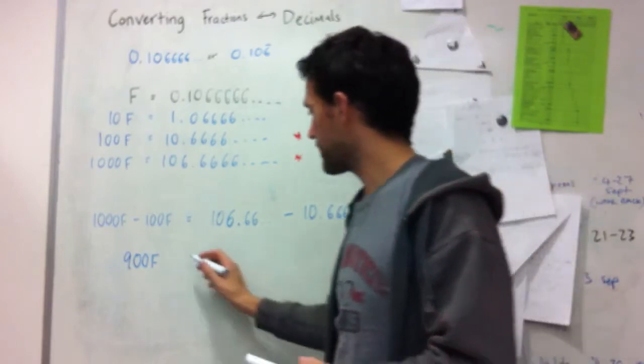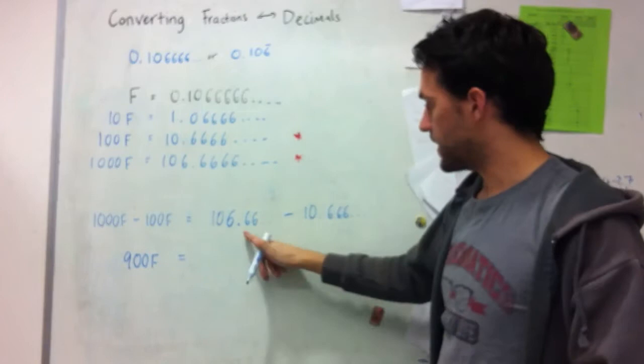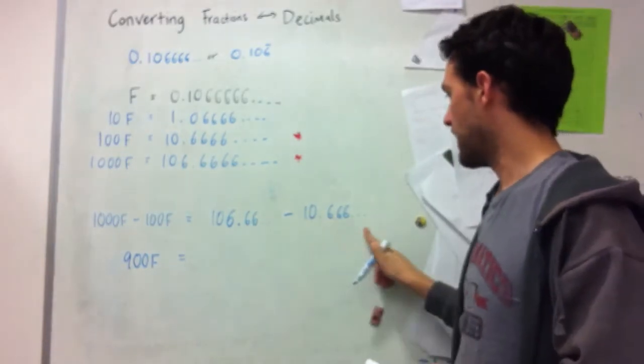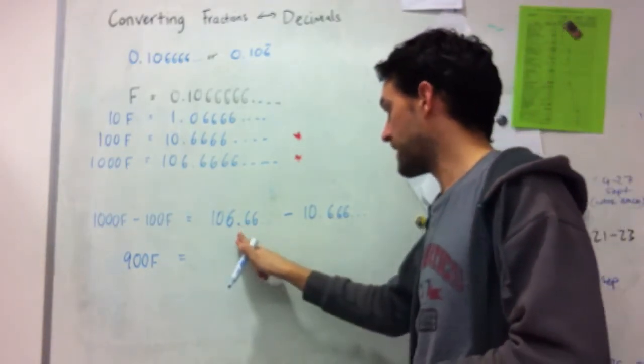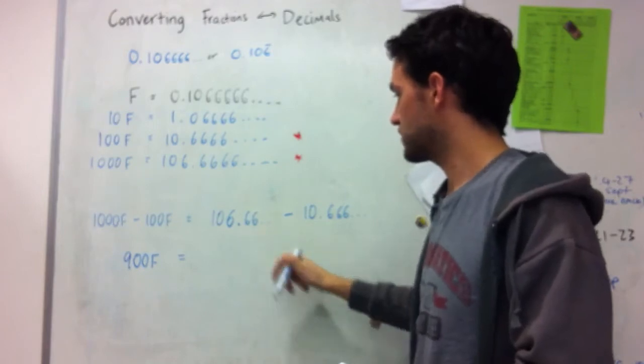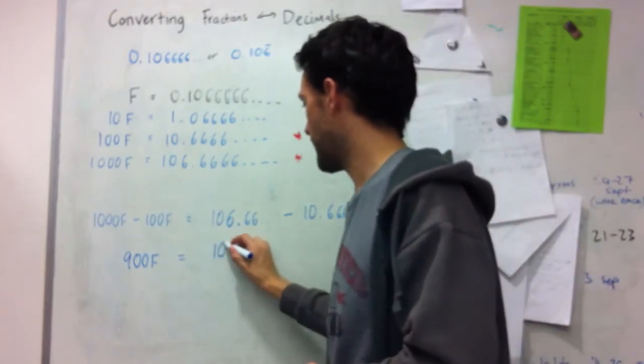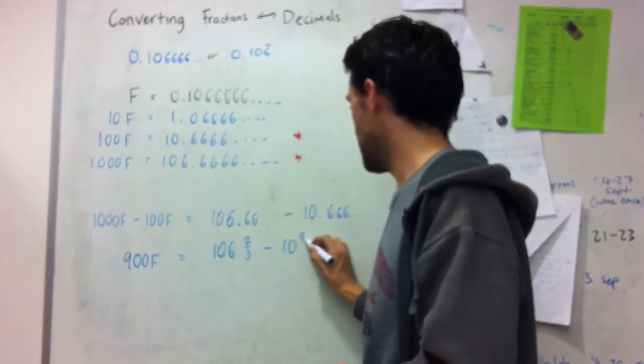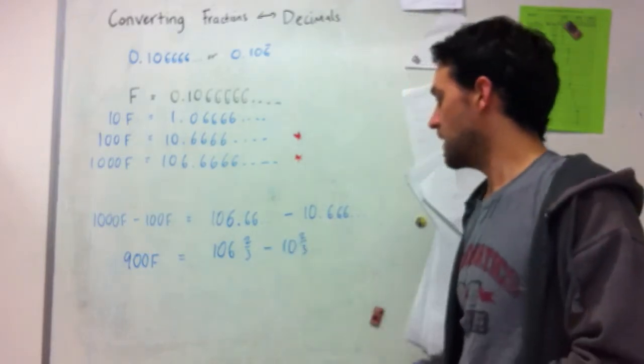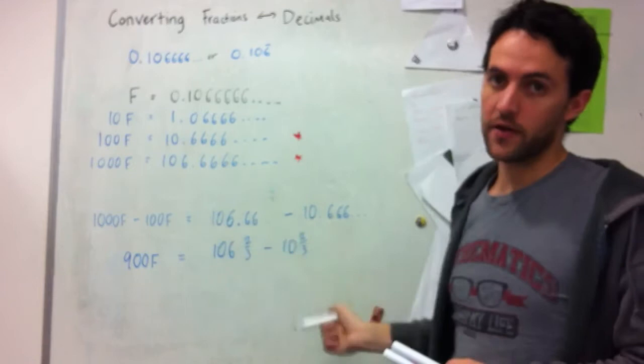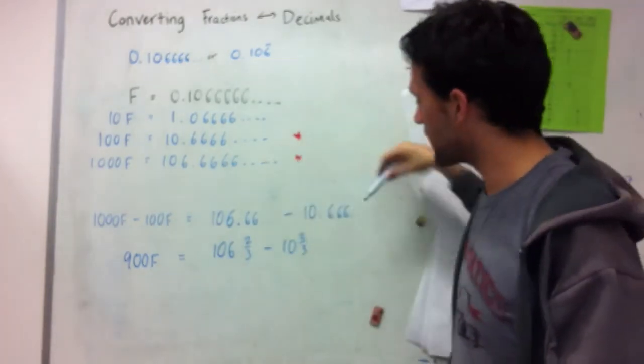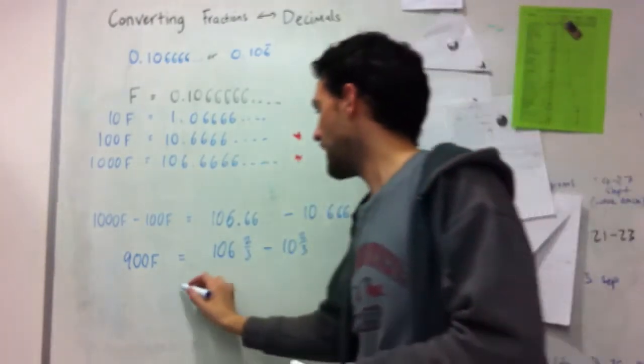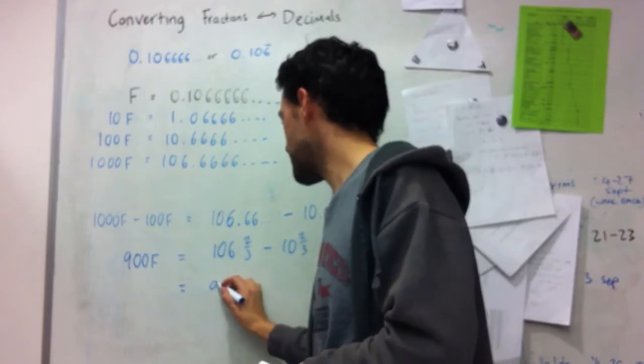And then on the other side I've got the decimal parts will cancel each other out. You might recognize that this is 106 and 2 thirds. I might write that out. It's 106 and 2 thirds minus 10 and 2 thirds. But either way, once I've got that recurring decimal and they're the same, I know that the decimal parts will cancel out. And on this side I just get 96.